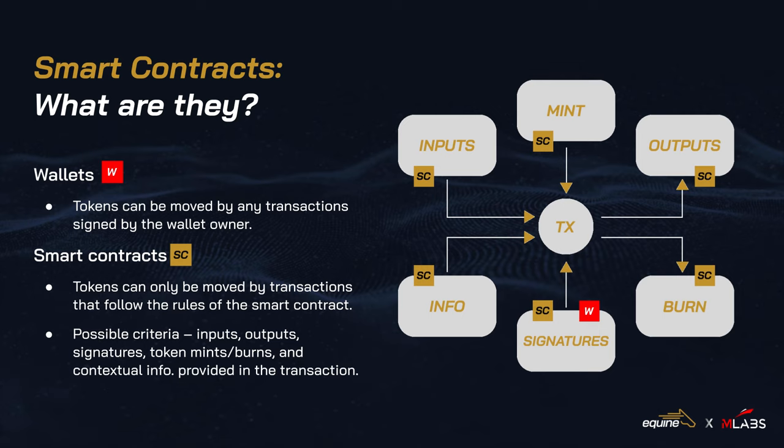If the tokens spent by a transaction are coming from a wallet, then all that matters is that the wallet sign the transaction. By contrast, if a transaction is spending tokens held by a smart contract, then the smart contract's code can inspect the entire transaction — inputs, outputs, info, mints, burns, and signatories. The transaction is only valid if the smart contract is satisfied with the transaction. In this way, while the wallet requires a specific person to authorize a transaction, smart contracts allow us to encode a rich set of rules to control what happens on the blockchain, often without any specific person being given special authority.